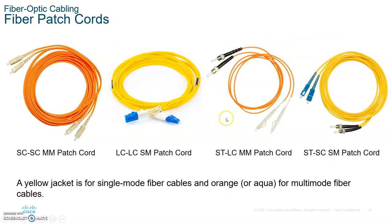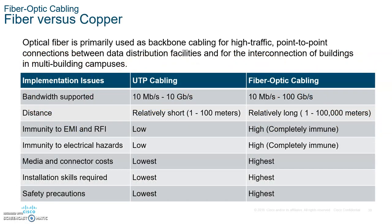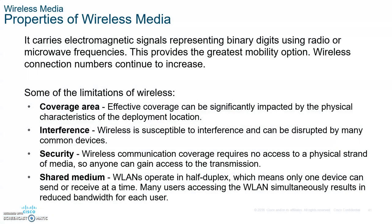Here are the different types of patch cores you may see, and a comparison of copper versus fiber — unshielded twisted pair cable is a lot more expensive than copper. When it comes to wireless media, we'll cover that in more detail when we get to wireless later in the course. Please copy down everything I asked you to, and I'll see you on the next video.